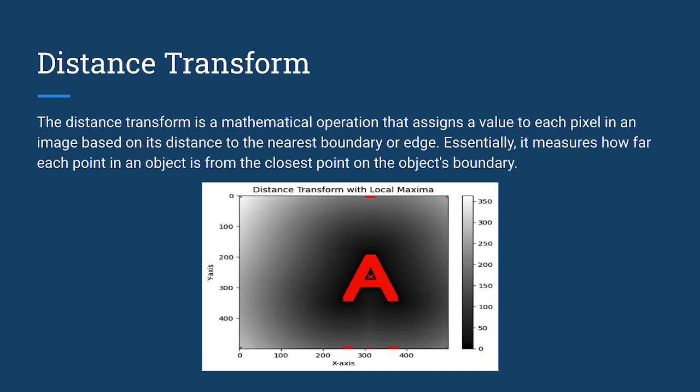By measuring pixel distances to boundaries, we could assign complexity values to every point. This enabled us to gauge the intricacy of shapes in both amino acid structures and script characters, regardless of their size or orientation.